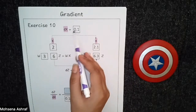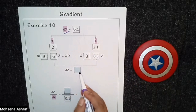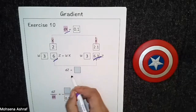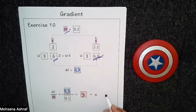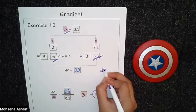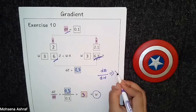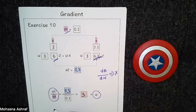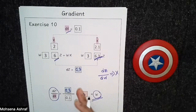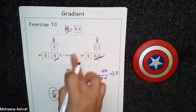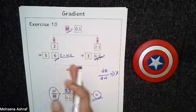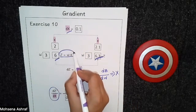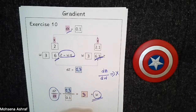Next, x is changing from 2 to 2.1, so dx = 0.1. We have to calculate dz: 6.3 − 6 = 0.3. So dz/dx = 0.3 by 0.1 = 3. And now you can see that we are getting the value of w. In the previous examples, we were doing dz/dw and getting x. But now we are doing dz/dx, which gives us the value of w. So if you have the rate of change for any two variables, you can calculate the third constant value.